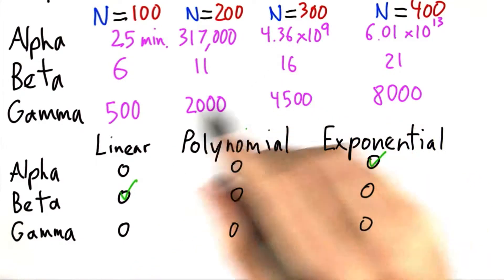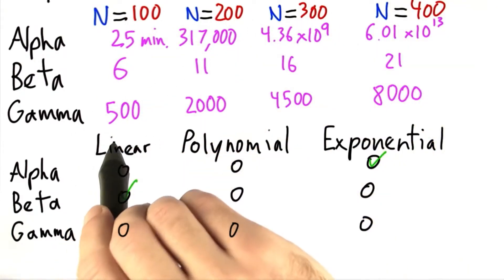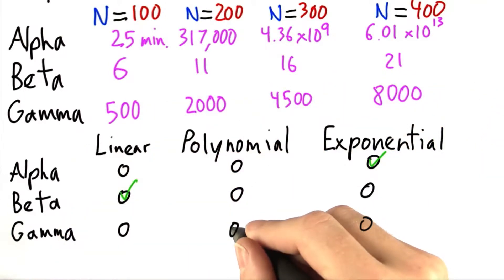Now, gamma might be a little trickier to see. But I think if we look at the input sizes relative to the running times in gamma, we can see that it looks to be polynomial.